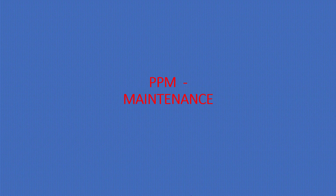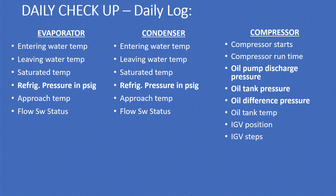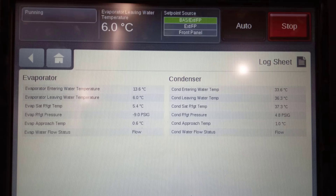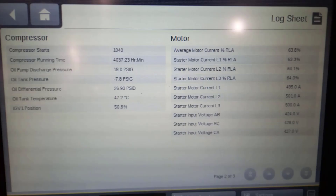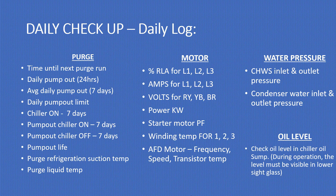For plant preventive maintenance daily checkup and daily log: start with the evaporator — check entering water temperature, leaving water temperature, saturated temperature, refrigerant pressure in PSIG, approach temperature, and flow switch status. Do the same for the condenser. For the compressor, check compressor starts, compressor runtime, oil pump discharge pressure, oil delta pressure, oil temperature, IGV position, and IGV steps. These are very important log items that HVAC technicians are supposed to check on a daily basis. You can get details for evaporator, condenser, compressor, purge, and motors — write them down and check against your daily log.